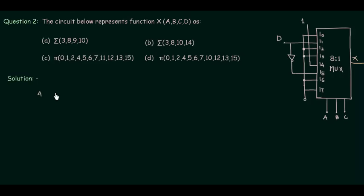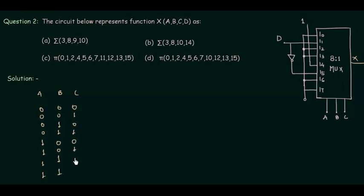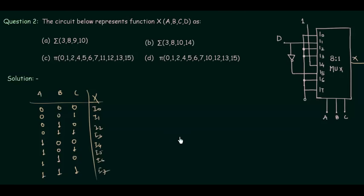When there are 3 selector variables, we have 8 possible combinations. Let's make the truth table quickly. The selector combinations go from 0,0,0 through 1,1,1, and the output is x. The inputs are i0, i1, i2, i3, i4, i5, i6, and i7. Now we find the Boolean expression for x.